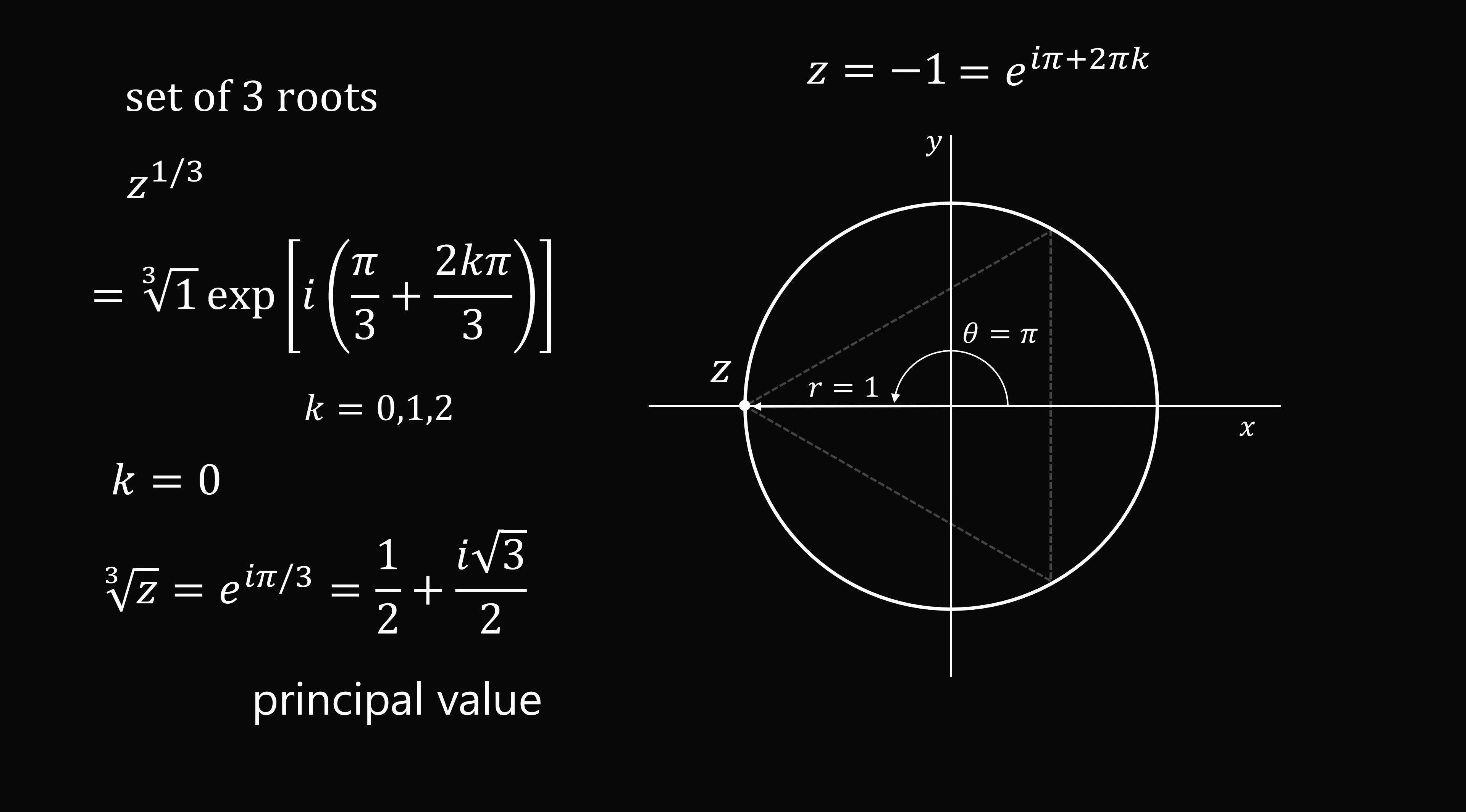If we plot the three roots, we get that they are the end points of this equilateral triangle. We have the principal value here, then we have the real root of negative 1 comma 0, and then the other root is the conjugate of this principal root.